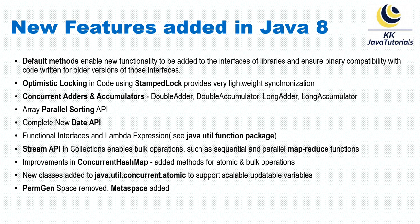Next, let's talk about improvements in ConcurrentHashMap. There are enhancements in JDK 1.8 — these enhancements include new methods that deal with atomic as well as bulk operations. You can explore the class to see which methods have been added in JDK 1.8.